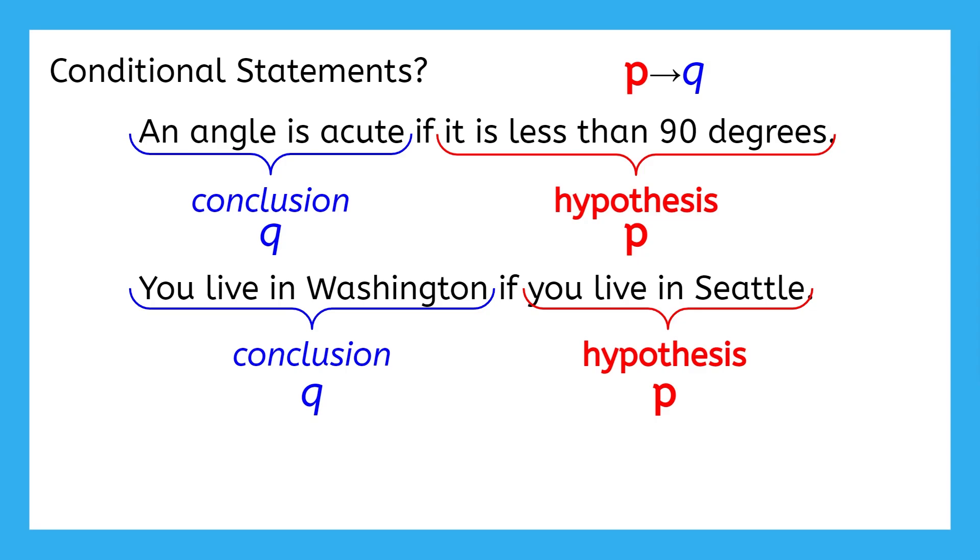For example, can I decide whether or not an angle is acute before I know that it's less than 90 degrees? No. I need to know that hypothesis first to logically come to that conclusion.